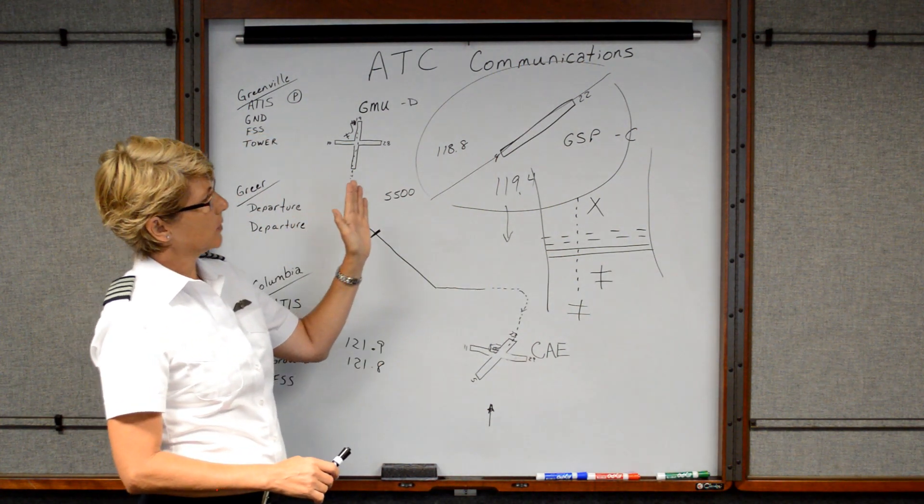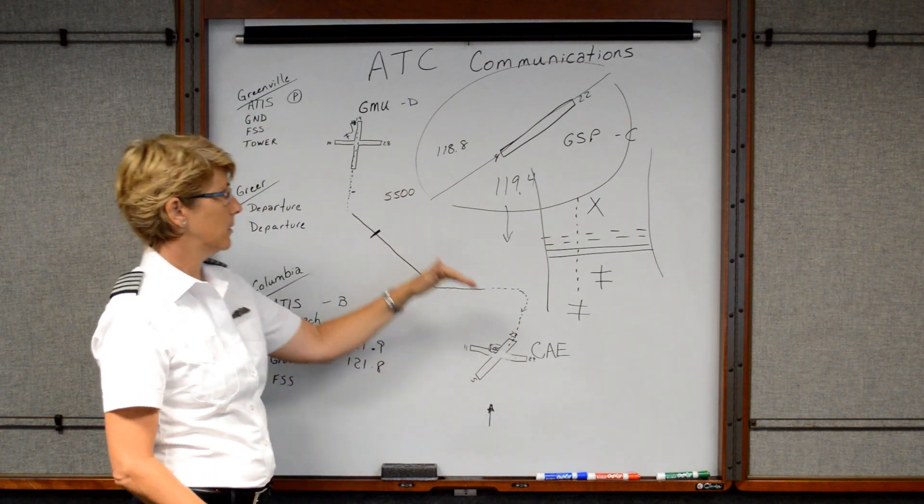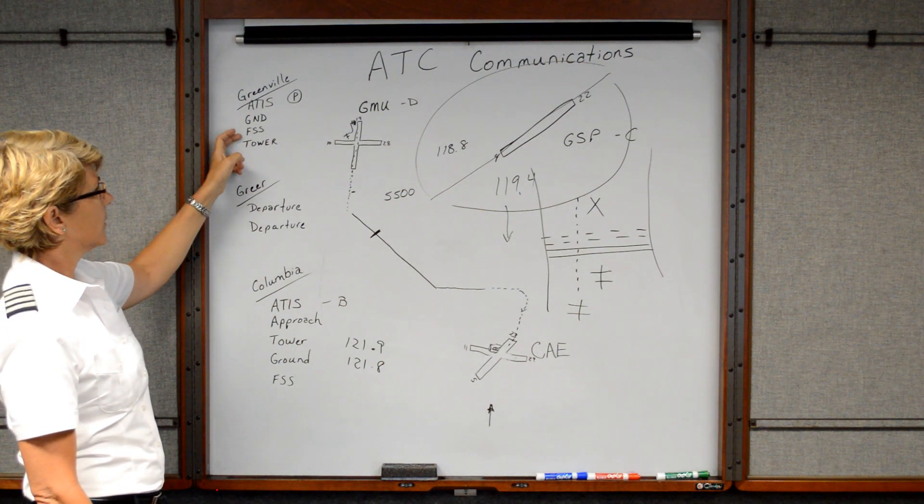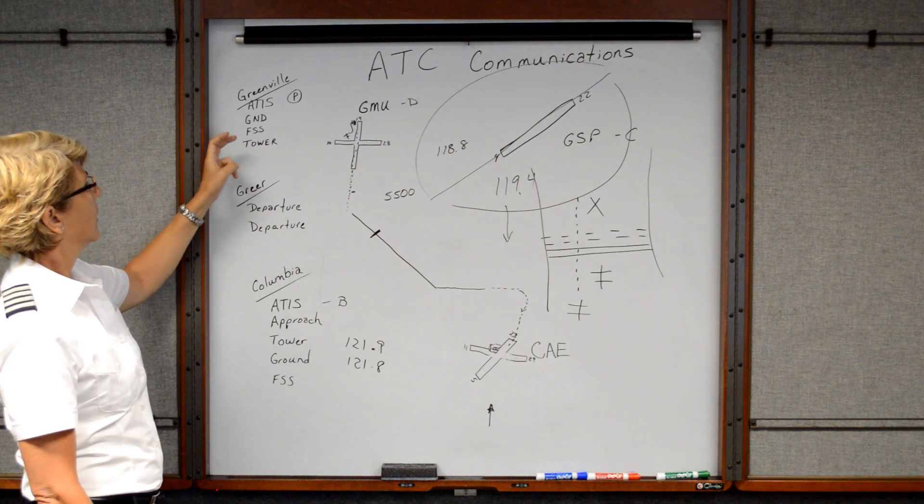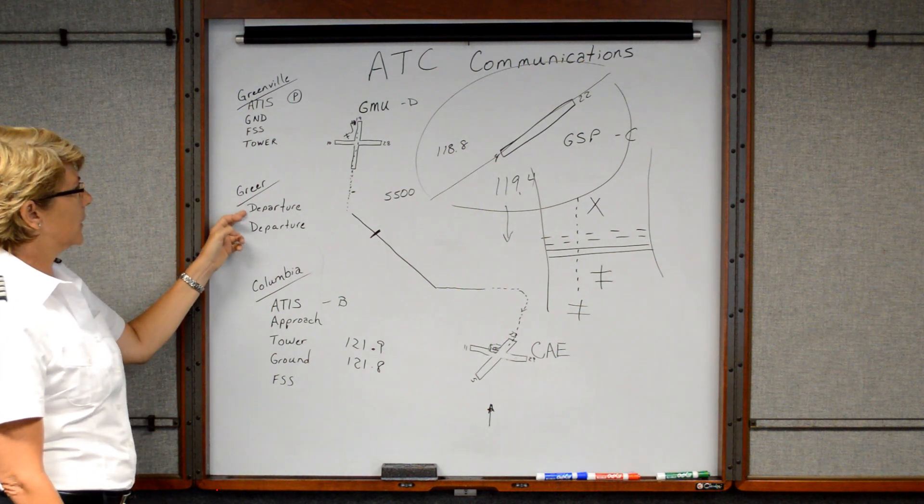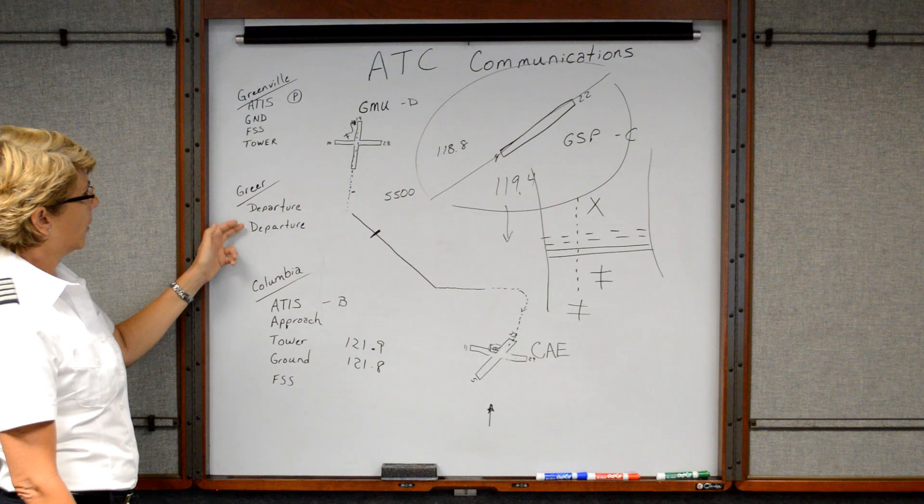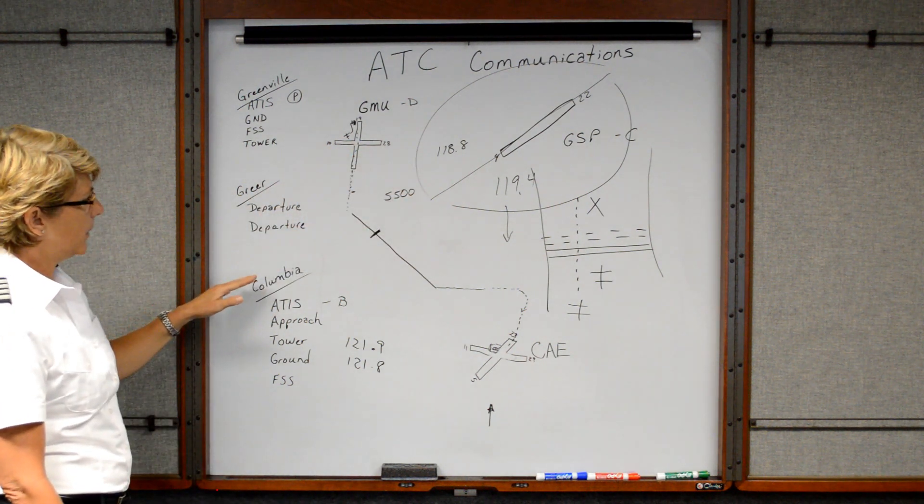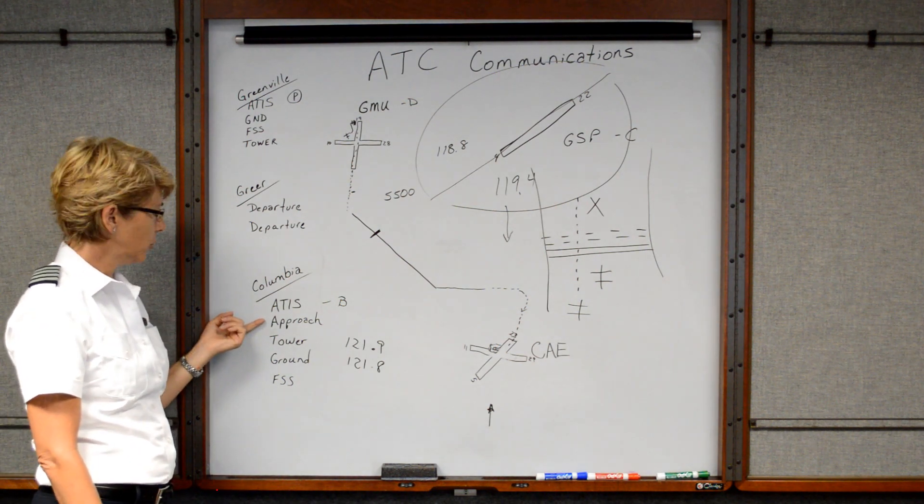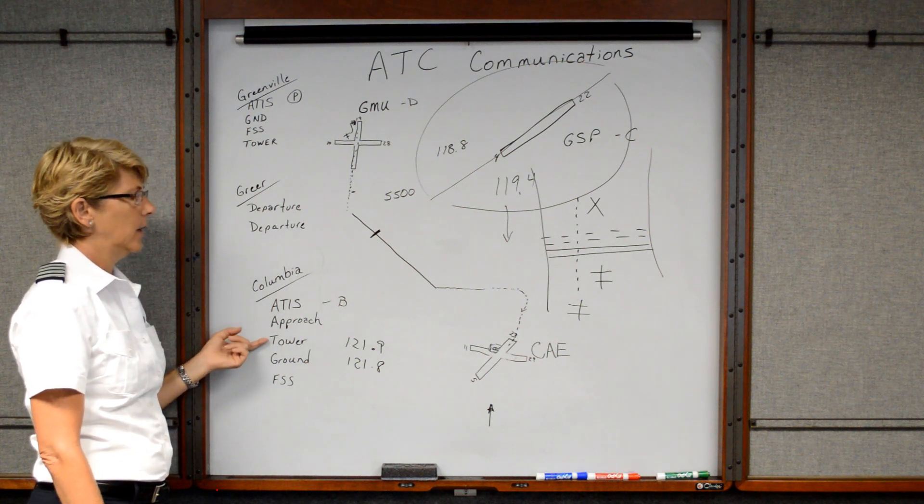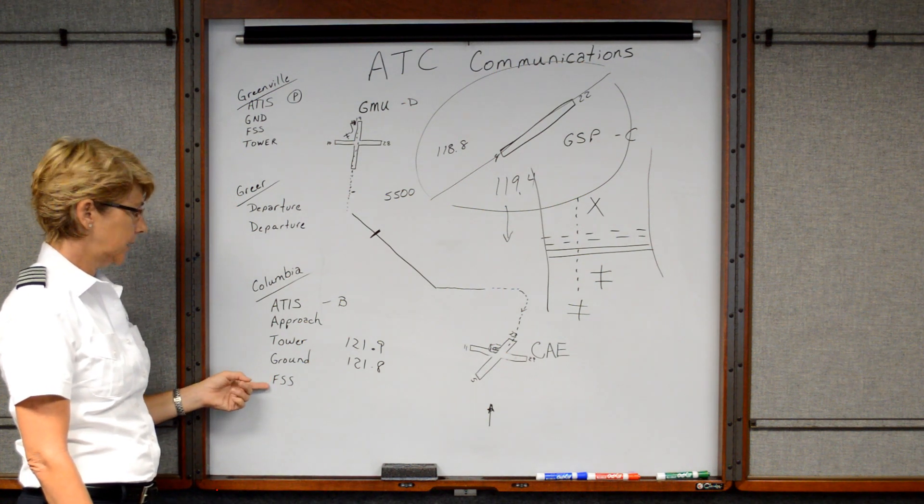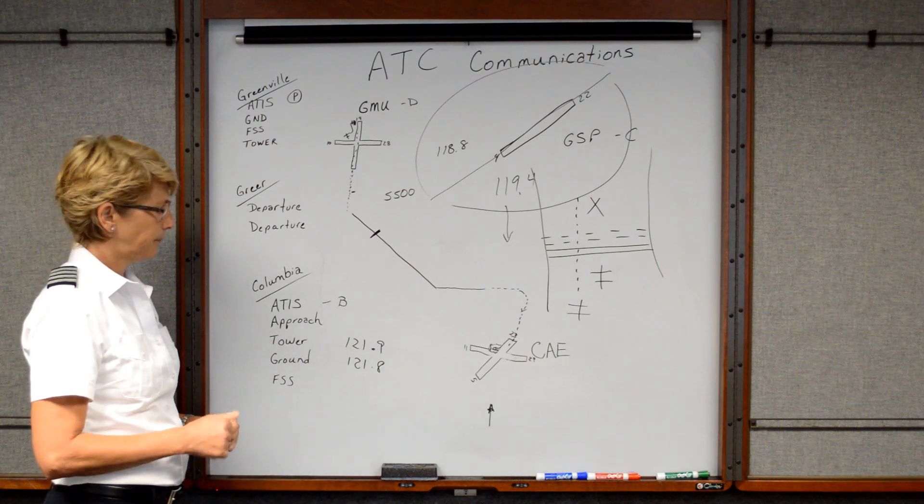All right. So that's how the ATC communications would work from one towered airport down to another towered airport. Just a quick review. We'd have to listen to the ATIS. Then we'd contact ground and then the flight service station, open our flight plan before we depart. Then we would ask tower for departure. Tower is going to switch us over to departure as we take off. We may get switched to the other departure on the other side. And then as we're approaching Columbia, we want to listen to their ATIS. And then we're going to eventually be handed over to Columbia's approach. Approach is going to hand you over to tower. And then once we clear the runway, we'll contact ground. And then when we complete our flight, we'll contact the flight service station to close our VFR flight plan.